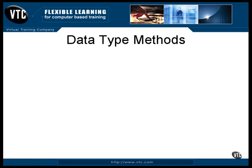These get methods have update methods that you can use to send data in the other direction. For example, there are a pair of getString methods that you can use to read from the result set, and there are a pair of updateString methods that you can use to write to the result set, and this can be sent to the database. I'll be showing you an example of that coming up.